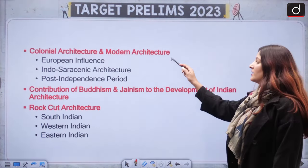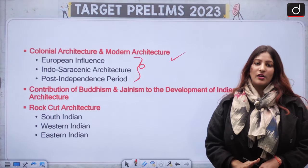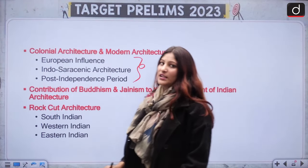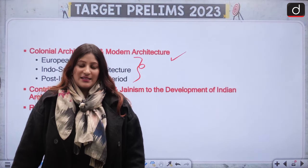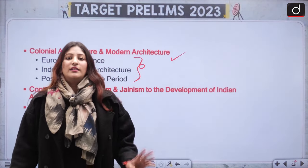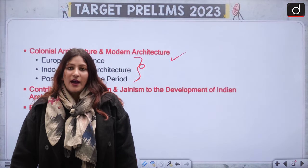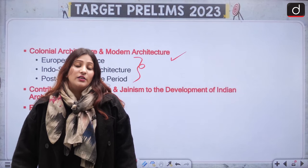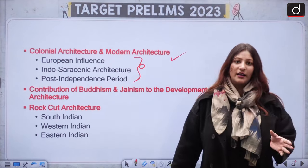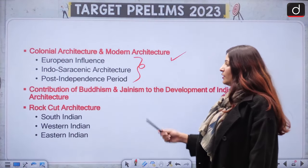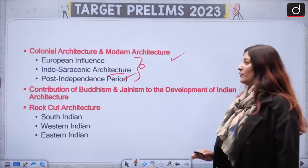In Colonial Architecture and Modern Architecture — specifically with respect to current affairs — the Central Vista, which is still under construction, means questions can come on modern architecture. Also, the installation of Subhash Chandra Bose's statue will be questioned with respect to modern Indian architecture. Post-independence Indo-Saracenic architecture, as well as European influence, are important.